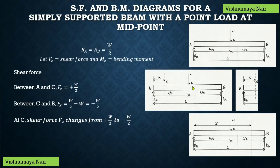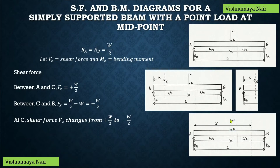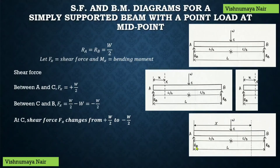To find the variation of shear force between points C and B, we consider a section X between these two points at a distance of x from end A. On the left portion, we have reaction force Ra acting upward and point load W acting downward. Forces upward are positive and forces downward are negative, so the resultant equals Ra − W = W/2 − W = −W/2. Therefore, the shear force equals −W/2 between points C and B.